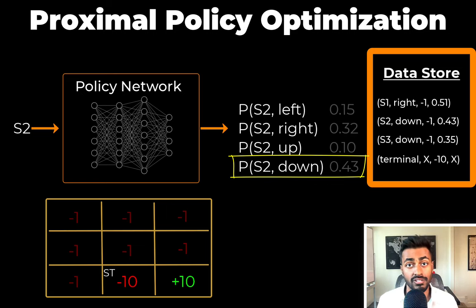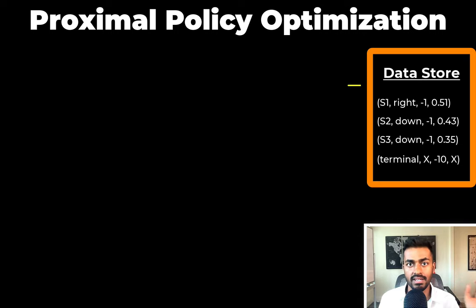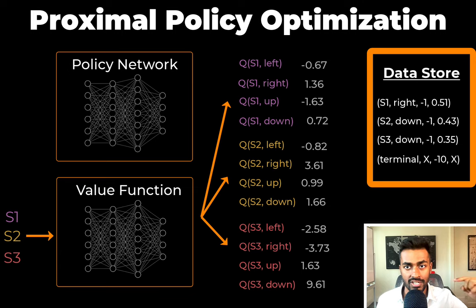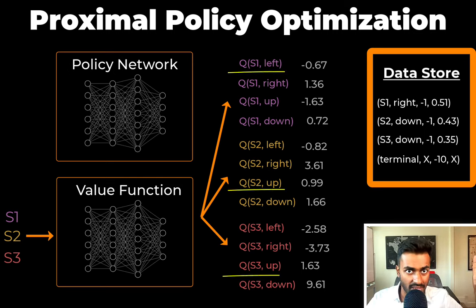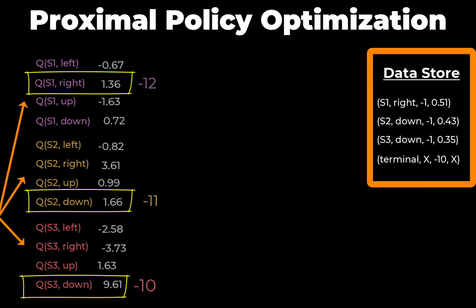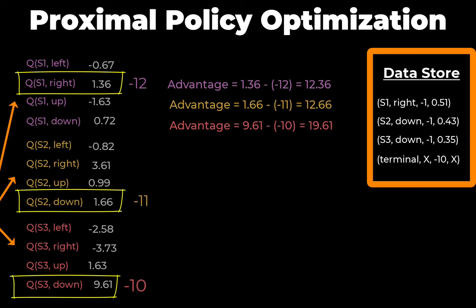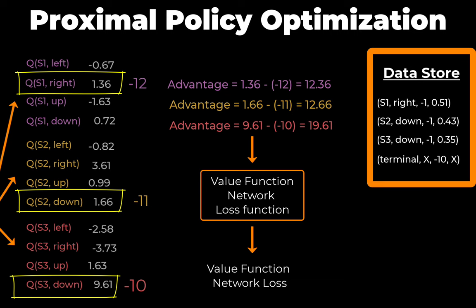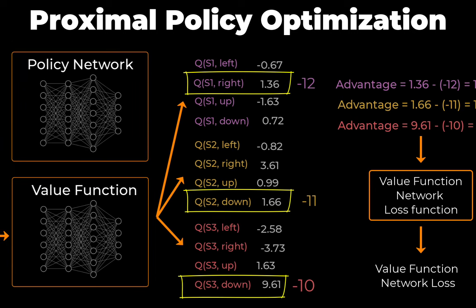Now let's talk about training the two networks. We take the batch of state, action, reward, and action probability. The state and action are used with the value function network to give us a Q value, which quantifies how good we expect this action to be. We then determine the total future reward for every time step using the data that we stored — this quantifies how good we actually performed. We take the difference between these two values, and this difference is known as the advantage. We use this advantage to compute a loss, which is then backpropagated through the value function network, and so it learns.